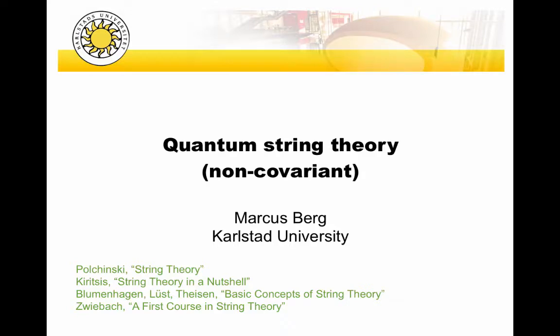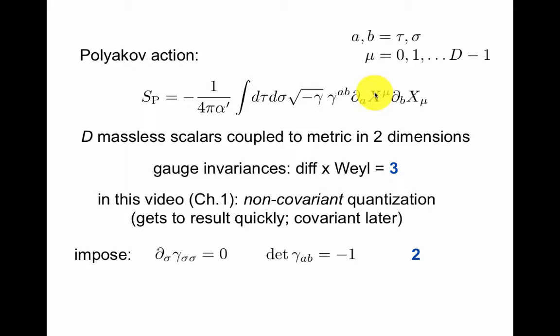This is non-covariant quantum string theory. In the previous video we talked about the Polyakov action. This is the embedding function x^μ and the world sheet metric γ_AB. AB runs from 0 to 1 and μ is a d-dimensional index.